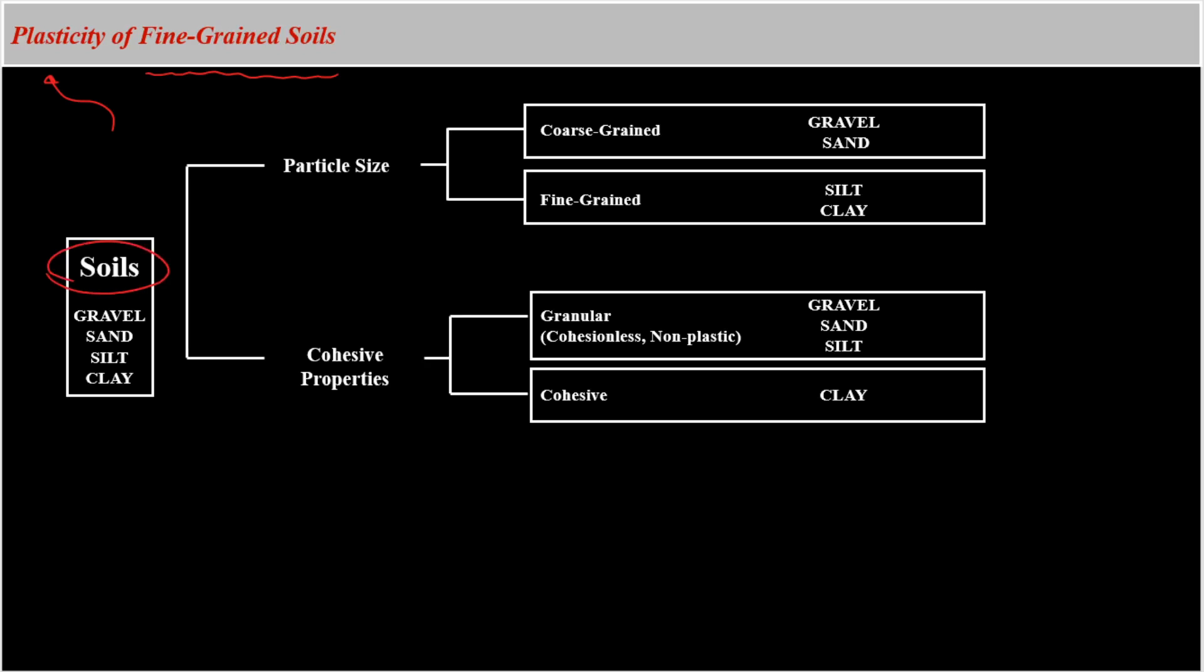There are two generic ways to classify soils. The first way is based on their particle size. We have coarse-grained soils that are gravel and sand, and fine-grained soils that are silt and clay. The boundary between these two soil types is 4.75 millimeter, which is the size of sieve.